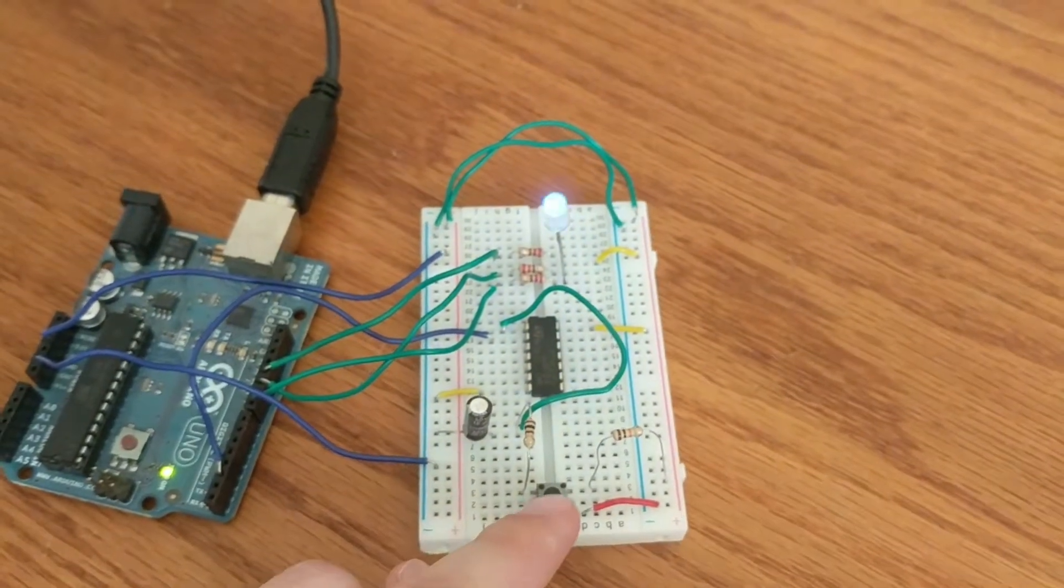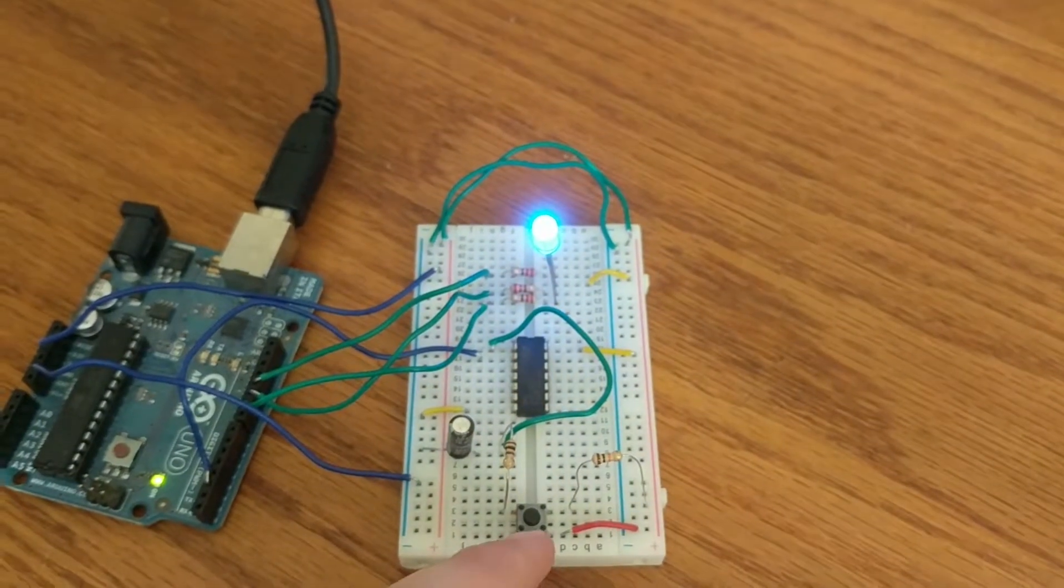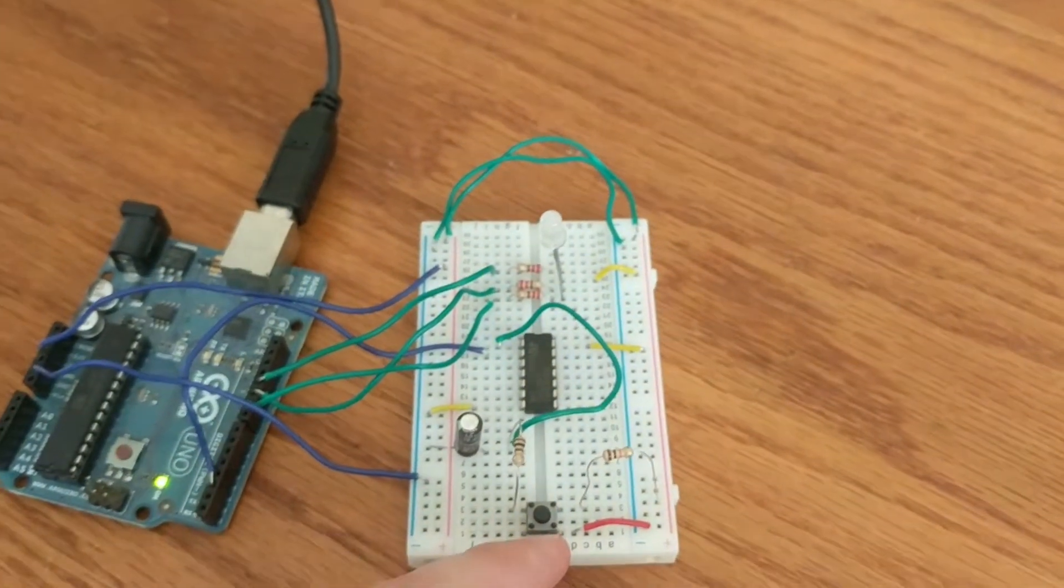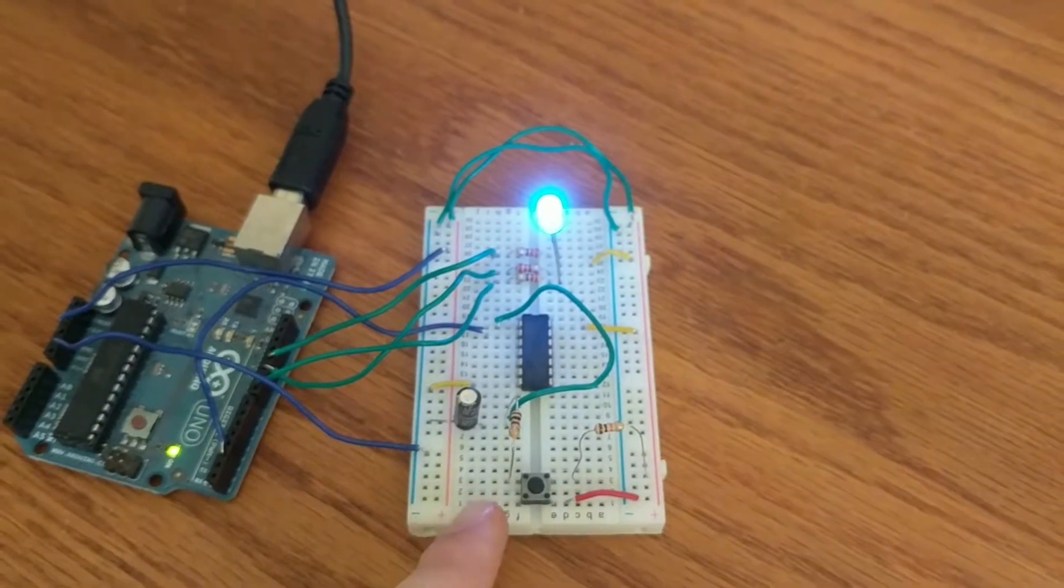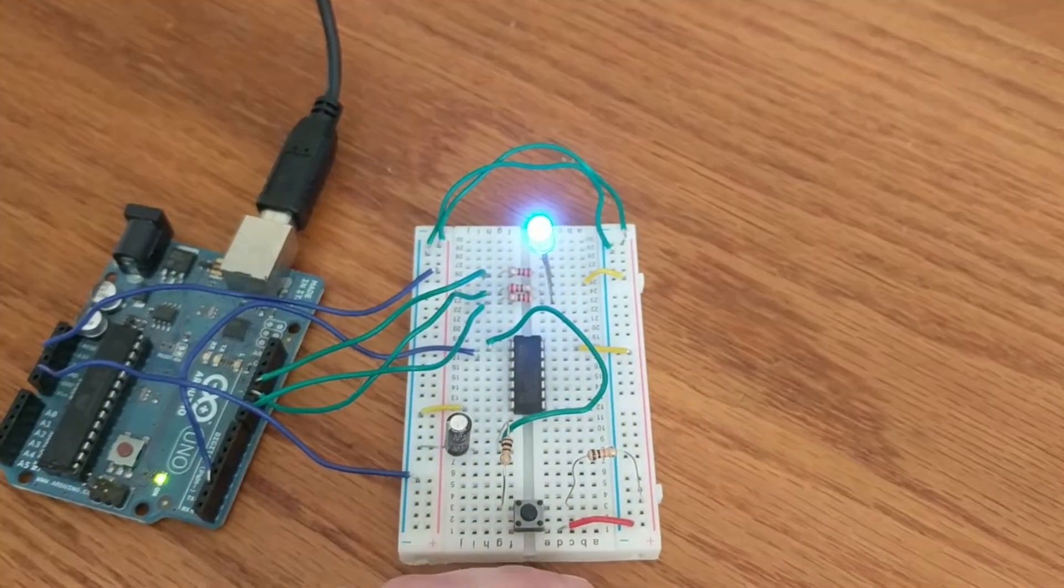Now, the debouncing is important here because we're using delay functions to control the fade up and fade down speed of the LED. In order to get the state of the button, we don't want to have to poll it because we need to be checking very frequently as the LED goes up and down.